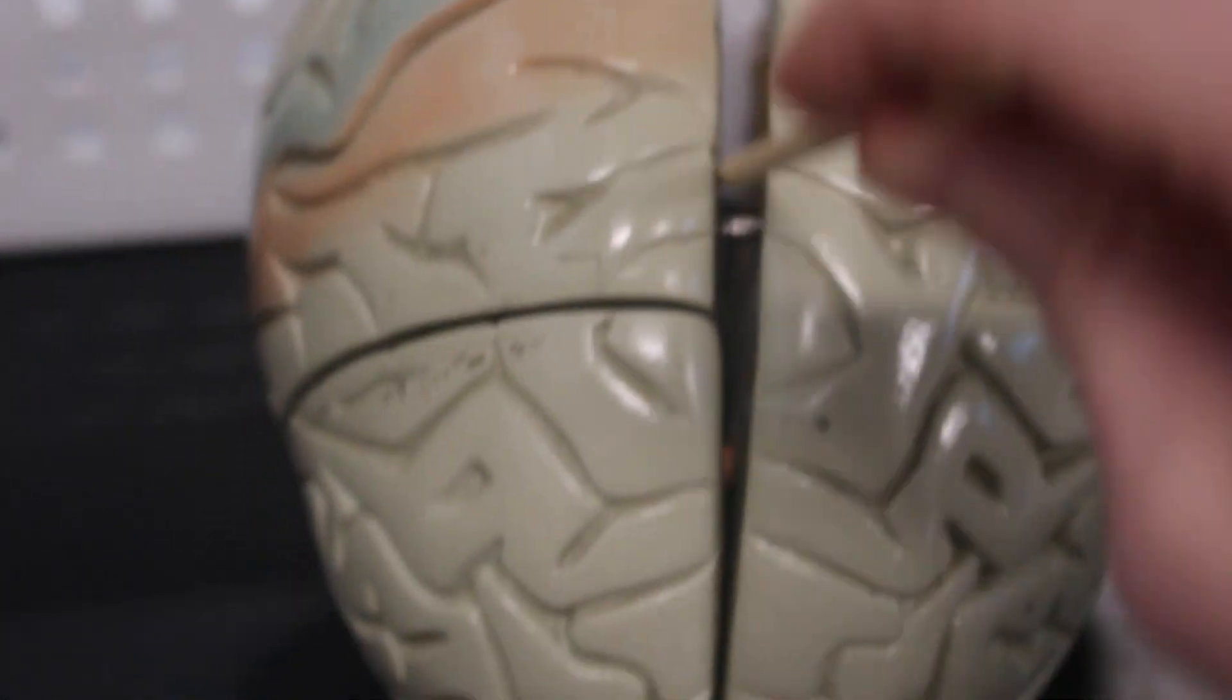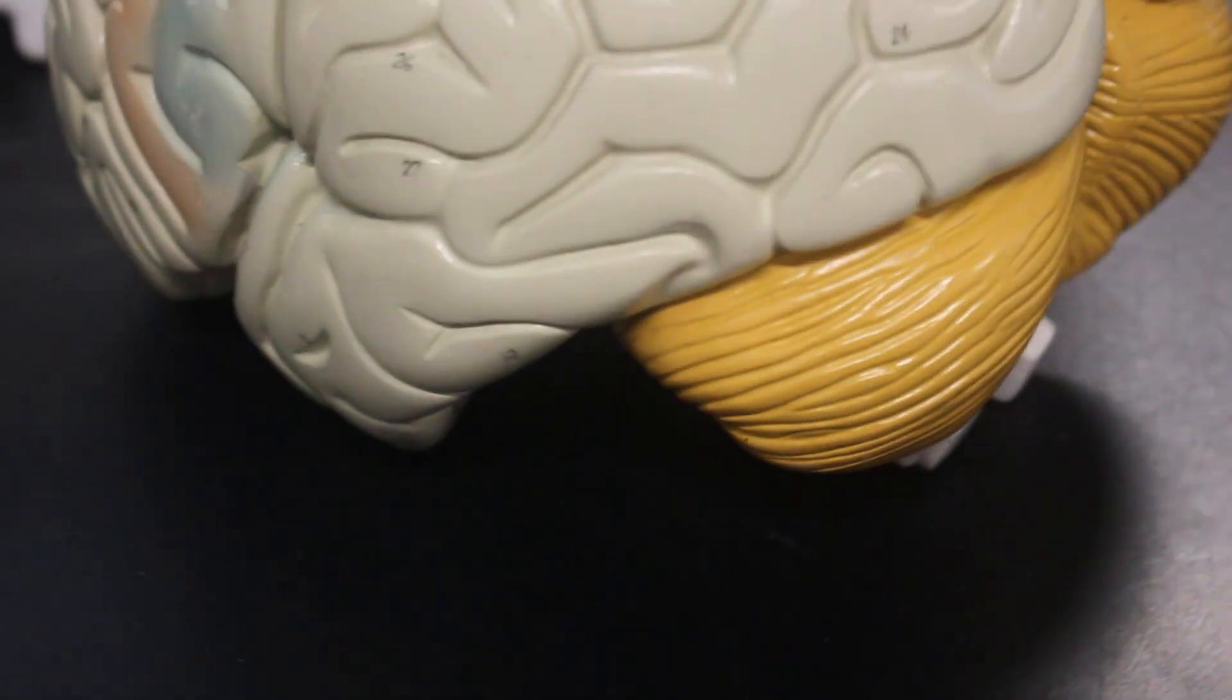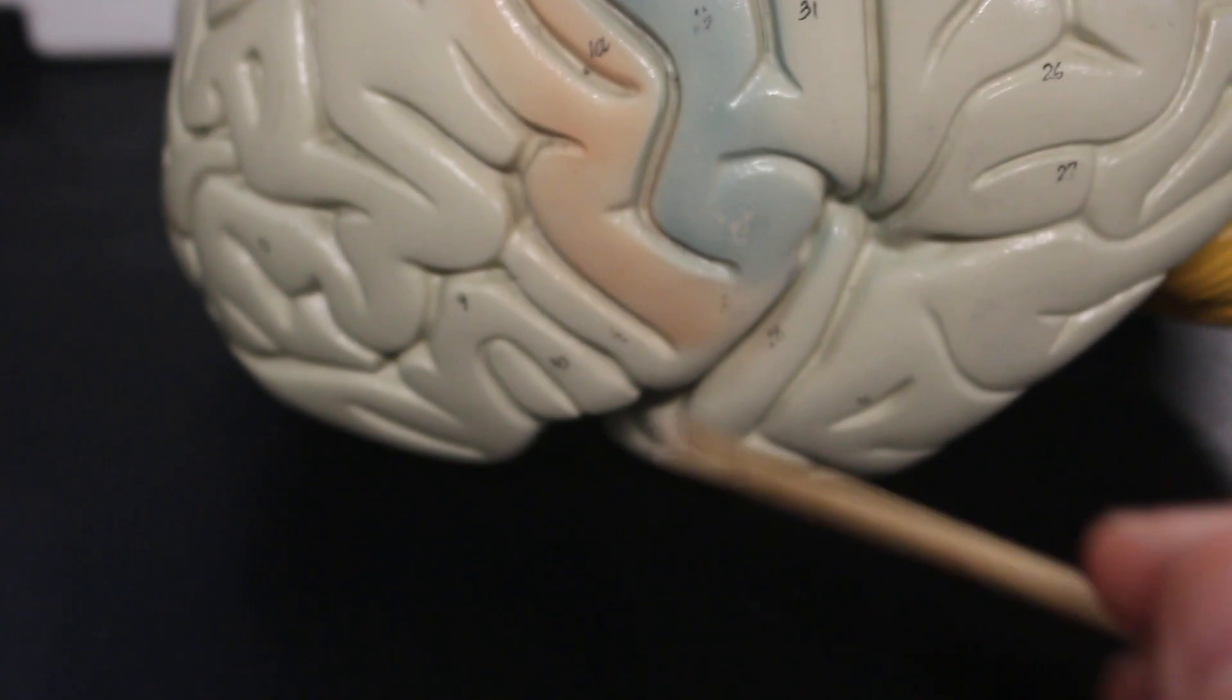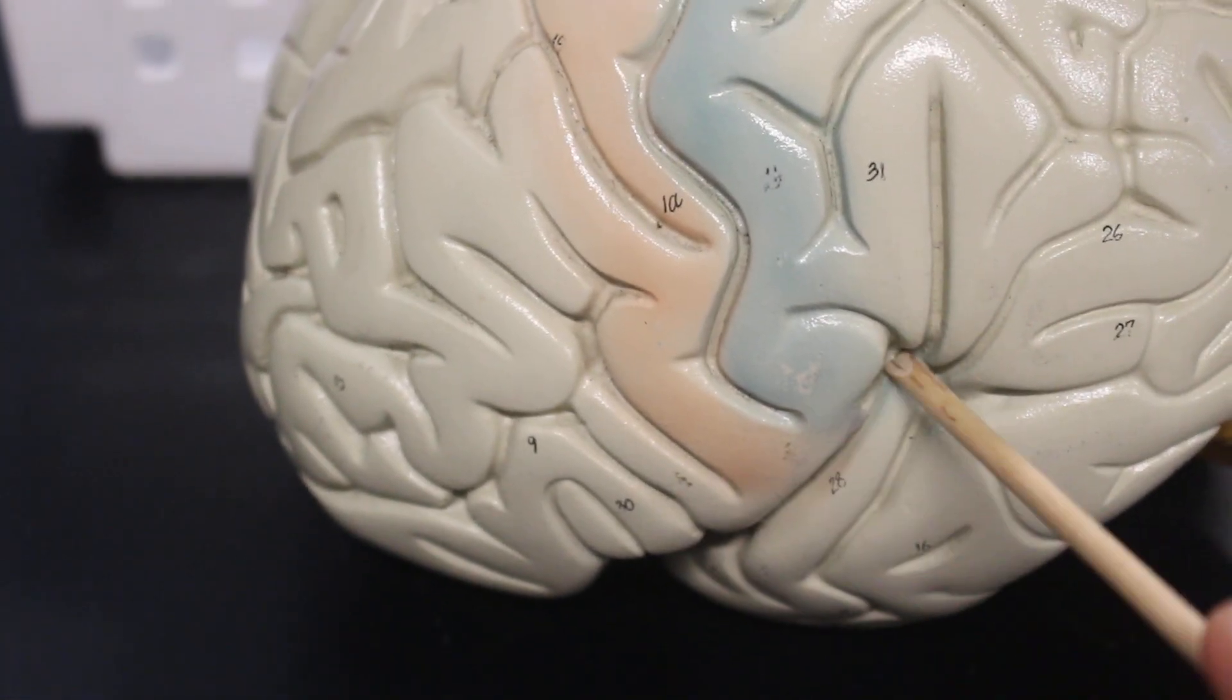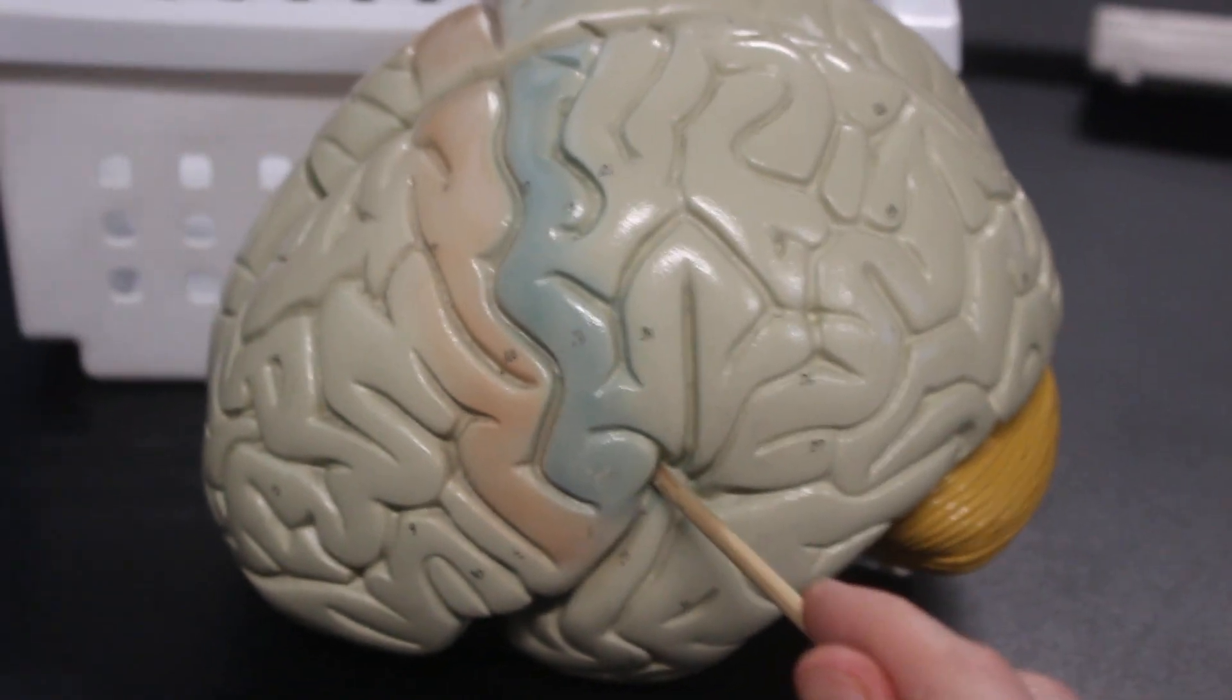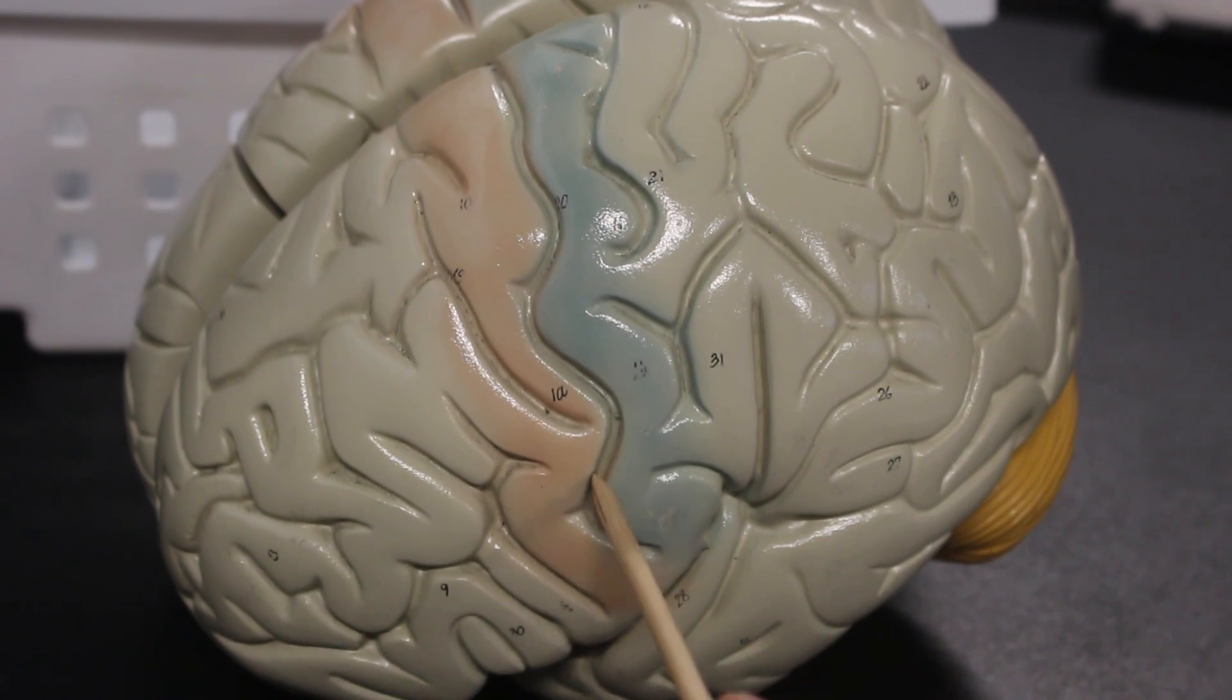From here we have the longitudinal fissure separating the two hemispheres of the cerebrum. We have in back, this is the transverse fissure separating the cerebrum from the cerebellum. Here is the lateral sulcus on the sides, on the lateral side, lateral sulcus. And then this here is the central sulcus.